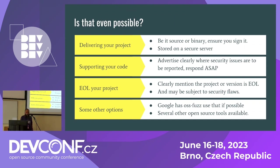Supporting your code: make sure you clearly advertise on your website where security issues need to be reported. If somebody needs to report a security issue, please use this email address. Do you prefer emails to be encrypted or plain text? What is the timeline customers and users are looking at? All of those things are very important so that people know where to report and how fast or slow you respond to security issues.